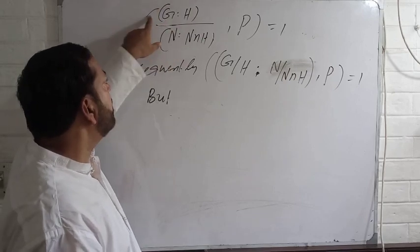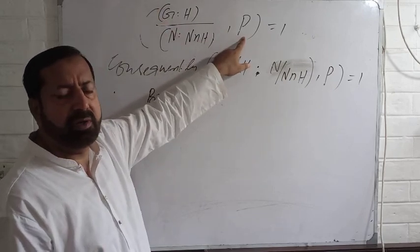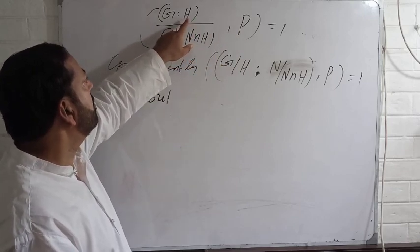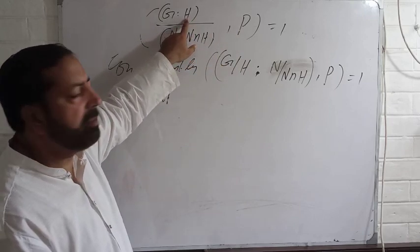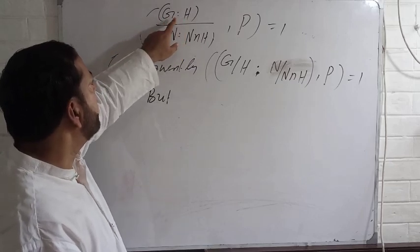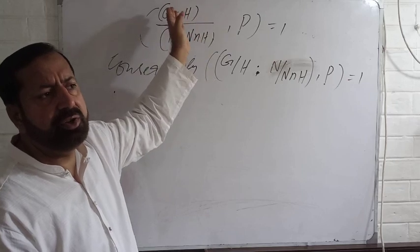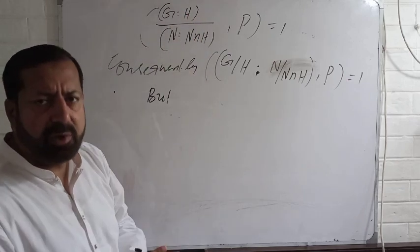We have established that this number is relatively prime to P because H is a Sylow P subgroup in G, so P does not divide this number and the index of H in G is prime to P. Similarly,